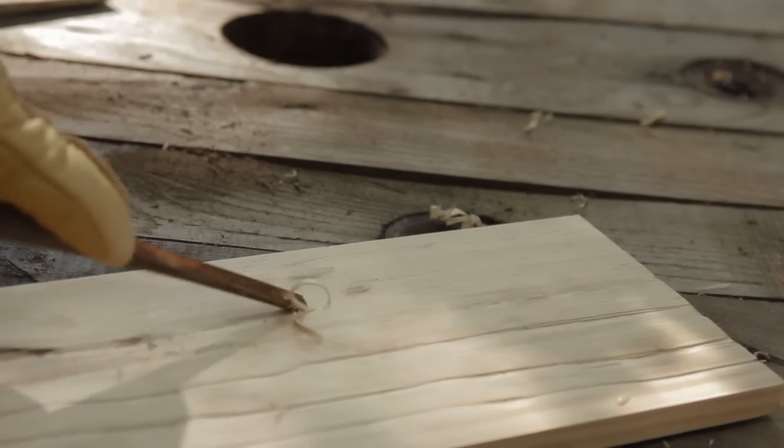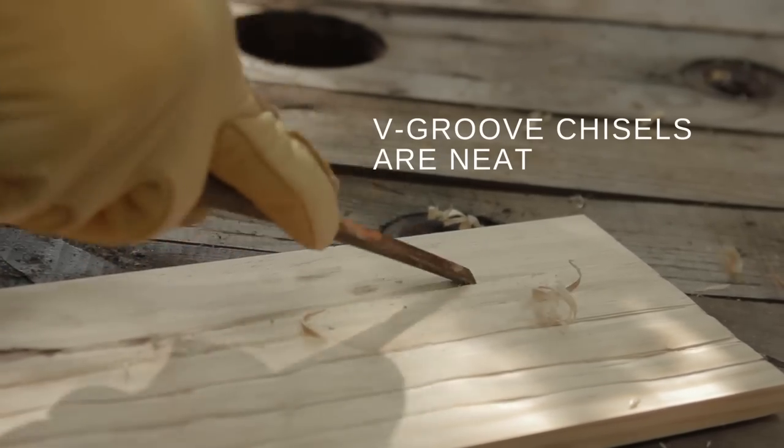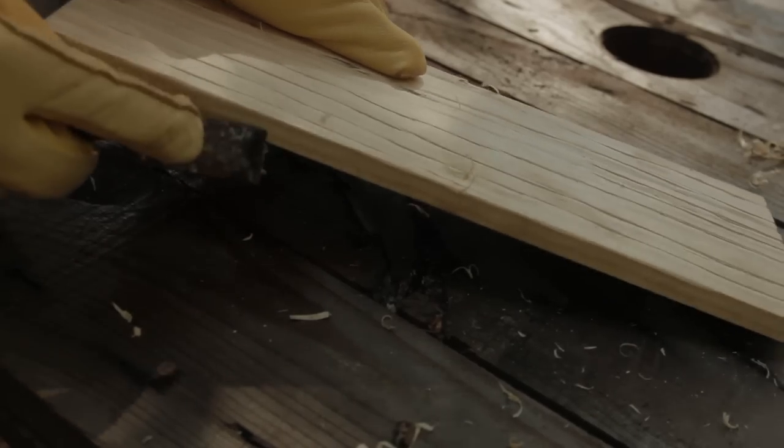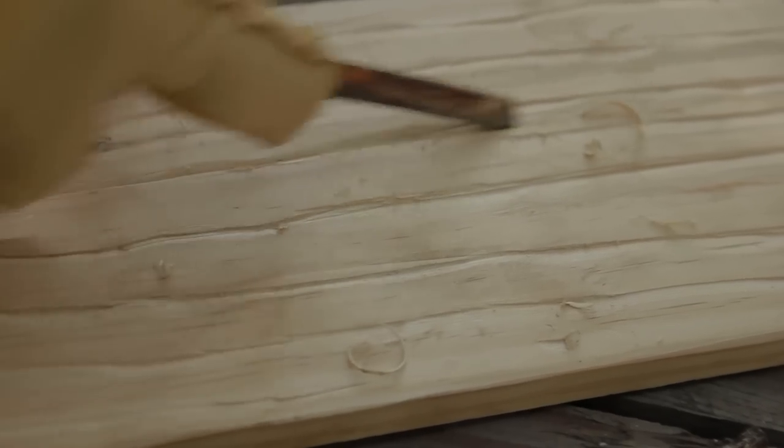I'm using a regular little skinny chisel, but if you have a gouge, a V-groove gouge chisel, that probably gives you an even better result. I'm just going to follow along and keep cutting and get all the sapwood and leave a raised area on the heartwood.